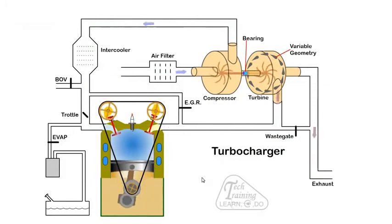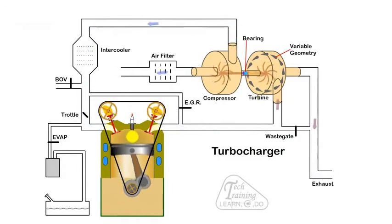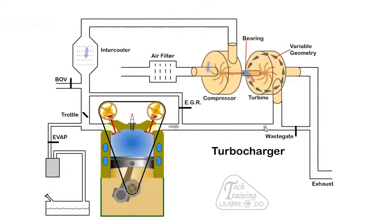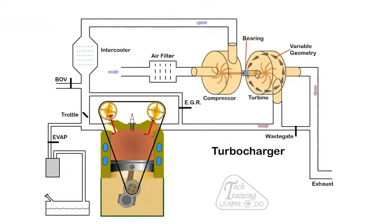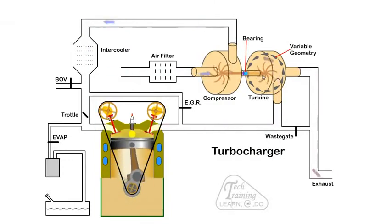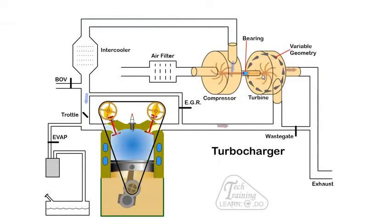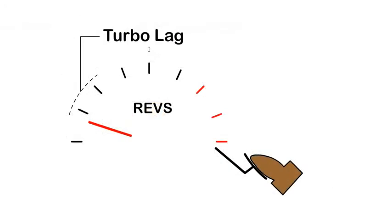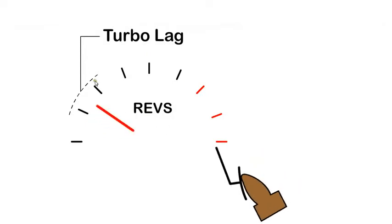A common problem with turbos is turbo lag. When the engine is accelerating there is an increase in airflow through the engine and thus through the turbo. However it takes time for the turbo to spool up to speed and develop the required boost pressure. This time delay or turbo lag is noticed when accelerating. At mid-range we get a surge in power as the turbo develops boost pressure. A variable geometric turbo helps reduce turbo lag.